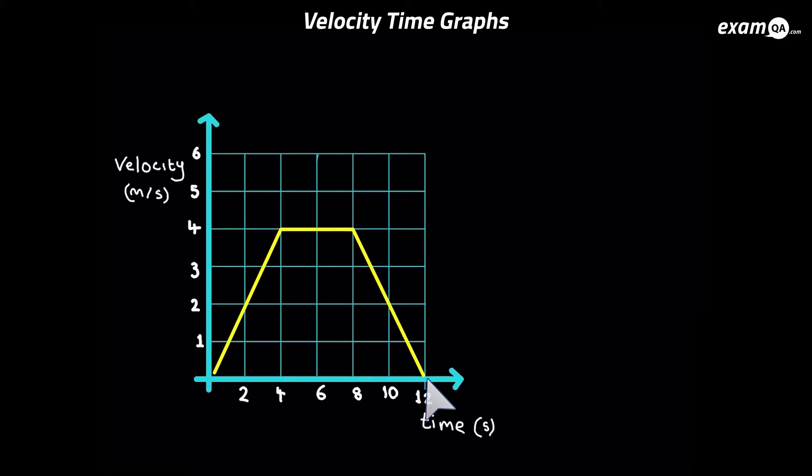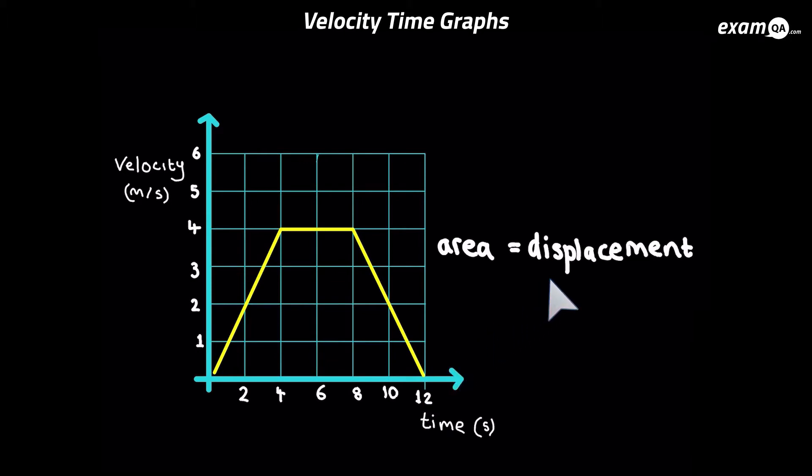Now there are two main properties of the velocity-time graph we're going to be looking at. The first property is that the area is the distance — the area underneath the graph is the distance of the journey. So let's go ahead and work out the distance of this journey.